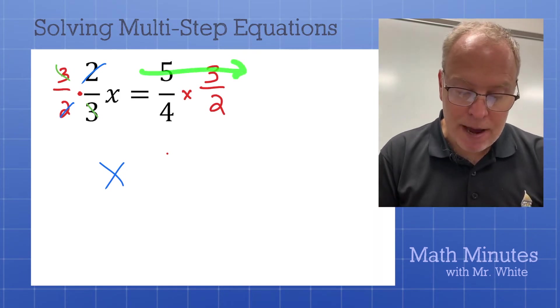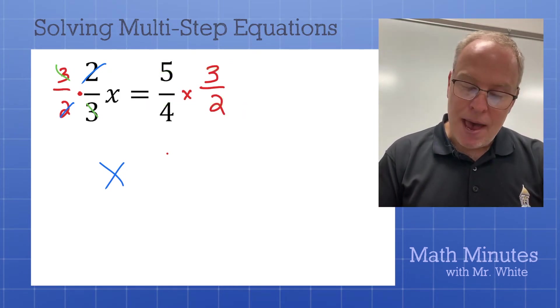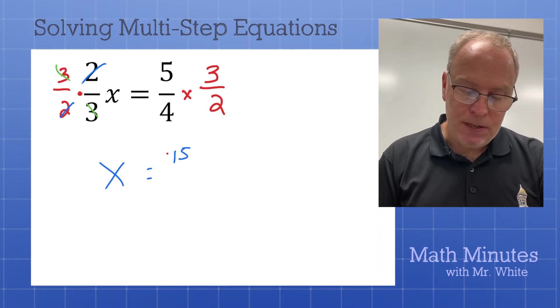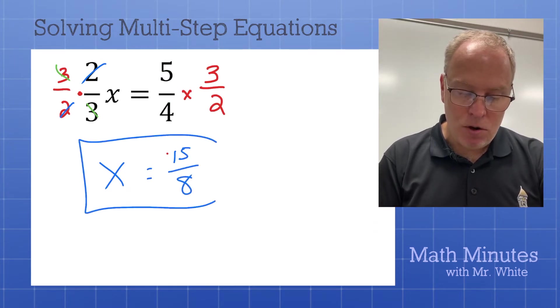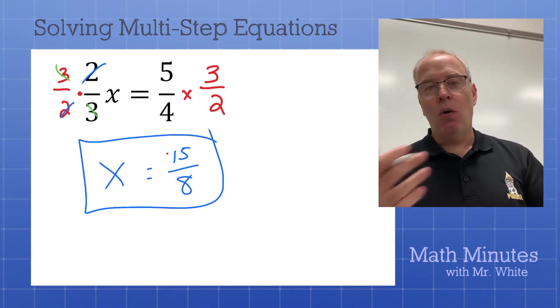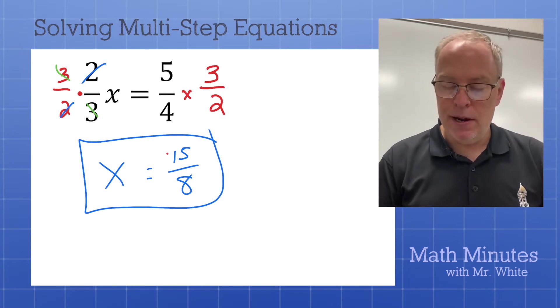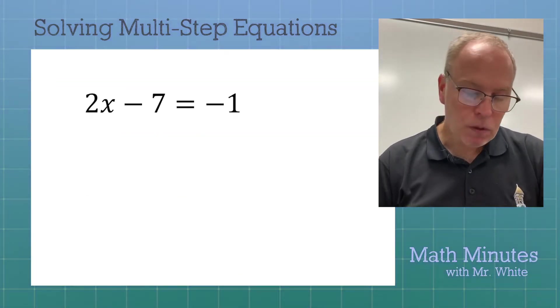We're going to flip over the 2 thirds, and it's going to become 3 halves. And I'm going to write the 3 halves over here. And just like earlier, I want you to do that so you can see that the 3's cancelled, so that you can see that the 2's cancelled, leaving 1x all by itself. That's called isolating the variable. x equals... And then you multiply fractions straight across. x equals 15 over 8. 15 over 8, and that's the answer. Or 1 and 7 eighths, if you want to write it as a mixed number.